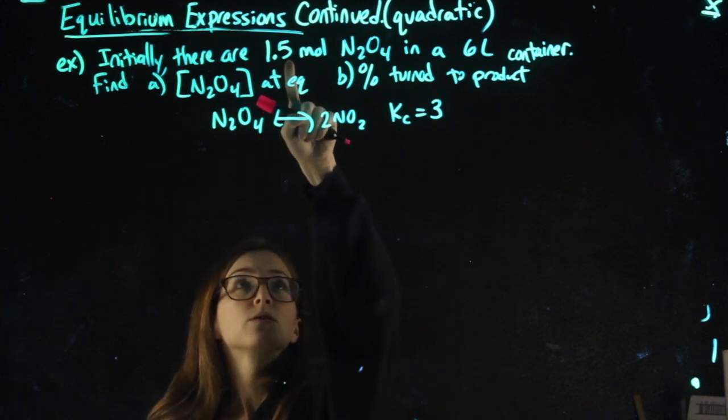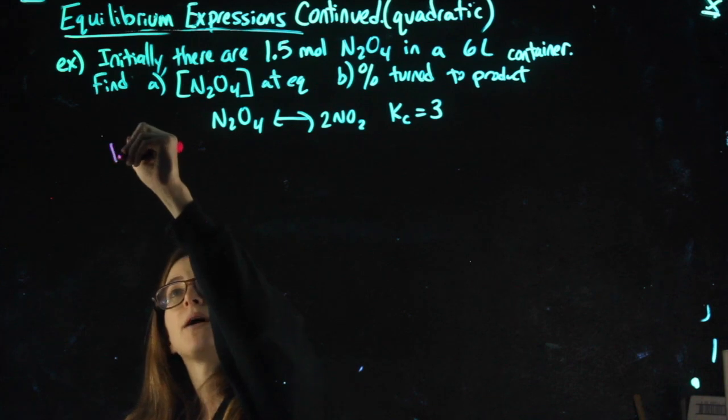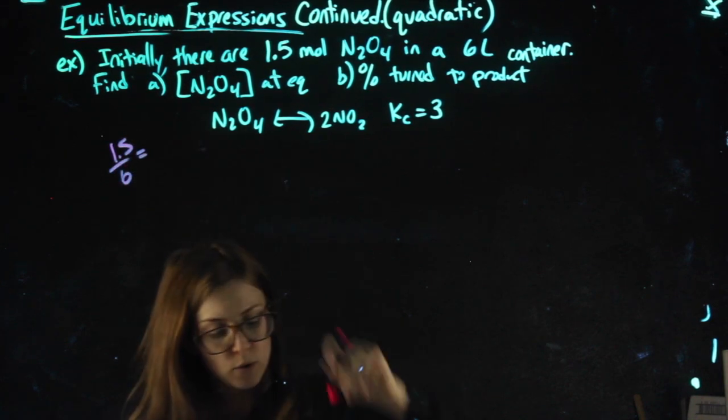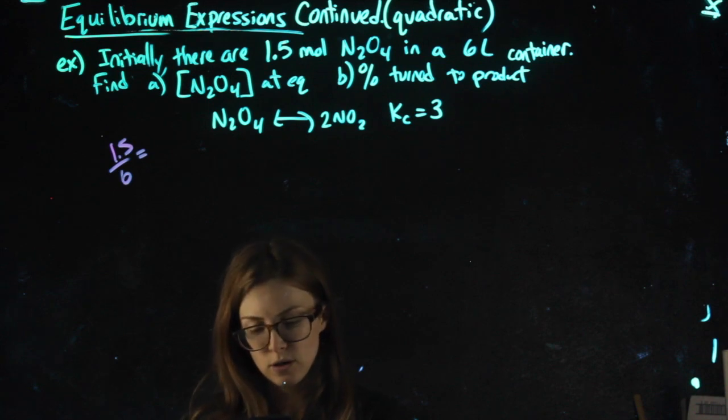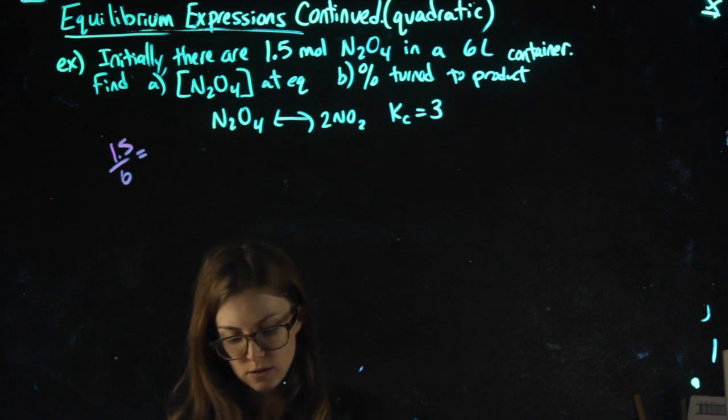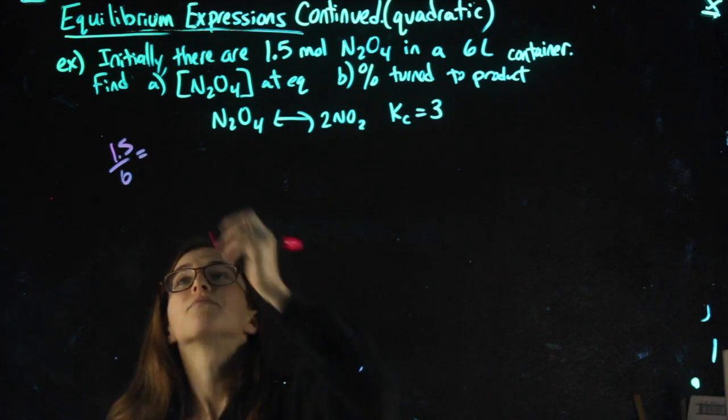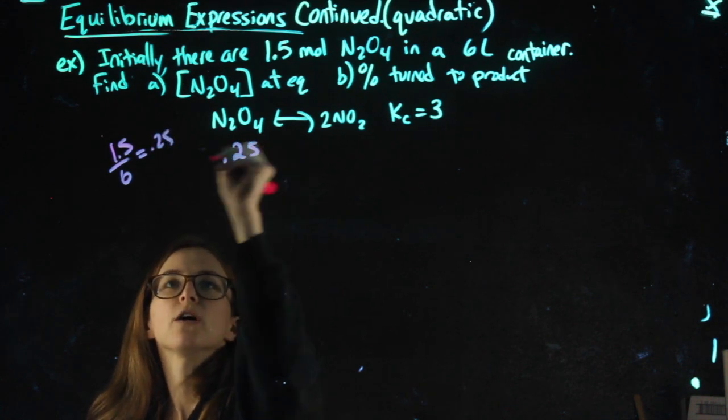Taking my moles, 1.5 divided by my liters, will get me my initial molarity of N2O4. That can go here in my ICE chart.